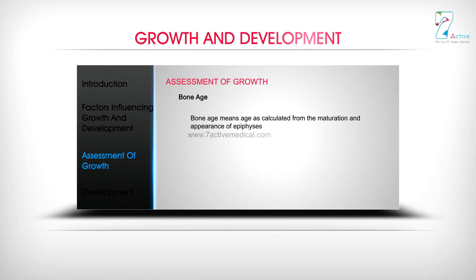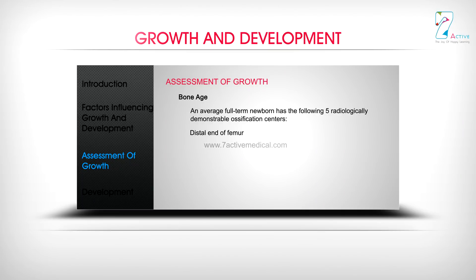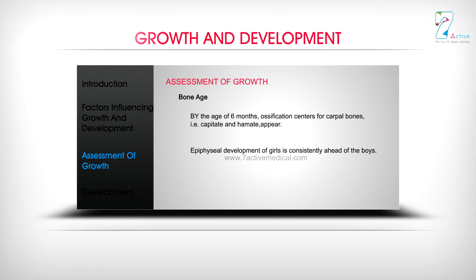Bone Age: Bone age means the age as calculated from the maturation and appearance of the epiphysis. An average full-term newborn has five radiologically demonstrable ossification centers: distal end of femur, proximal end of tibia, talus, calcaneus, and cuboid. By the age of 6 months, ossification centers for carpal bones — that is, capitate and hamate — appear. Epiphyseal development of girls is consistently ahead of boys.